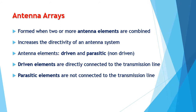Antenna arrays are formed when two or more antenna elements are combined to form a single antenna. The purpose of an array is to increase the directivity of an antenna system. There are two types of antenna elements: driven and parasitic. The parasitic elements are also called non-driven elements. The driven elements are directly connected to the transmission line and receive power from the source. Parasitic elements receive energy only through mutual induction with a driven element or other parasitic element.